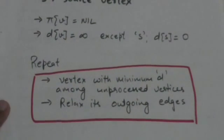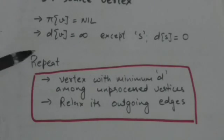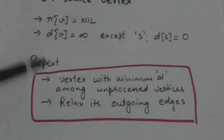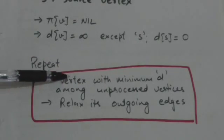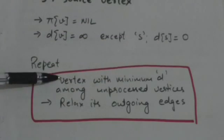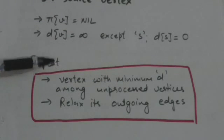We repeat this procedure until all vertices of the graph are processed: among all unprocessed vertices, we choose the vertex with the minimum value of d and we relax its outgoing edges.